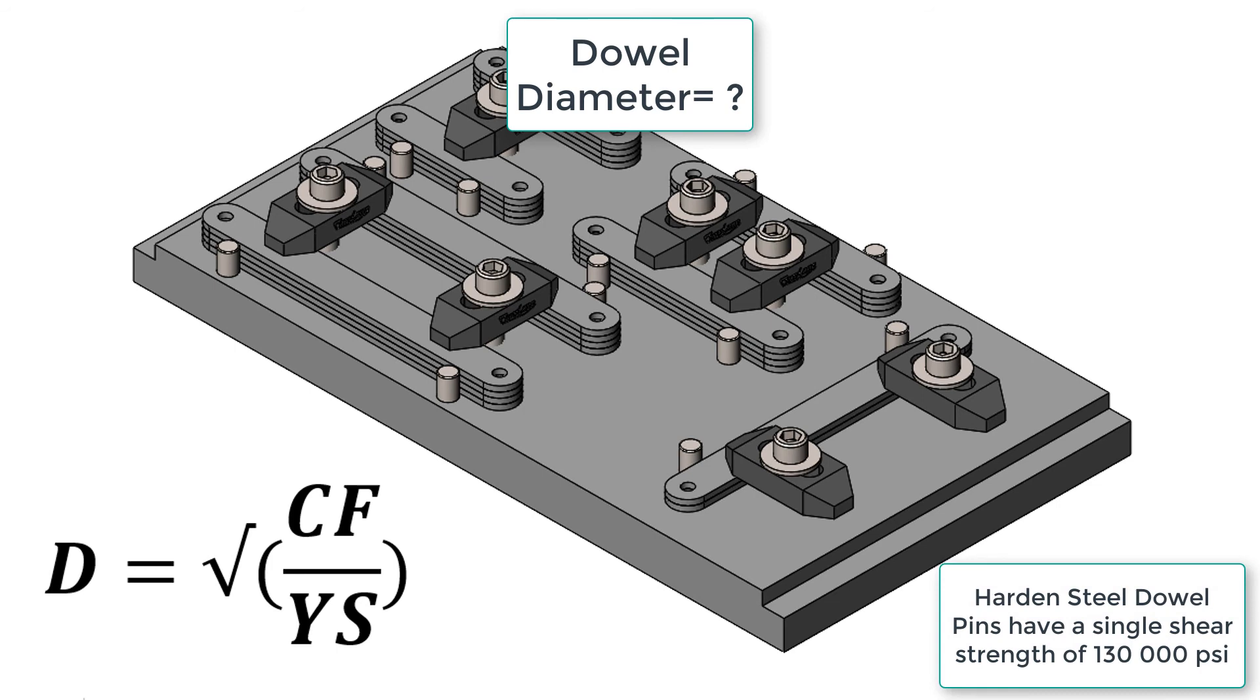When performing these calculations, we must keep in mind that hardened steel dowel pins have a single shear strength of 130,000 psi. As long as the cutting force does not exceed this, our calculation remains valid.